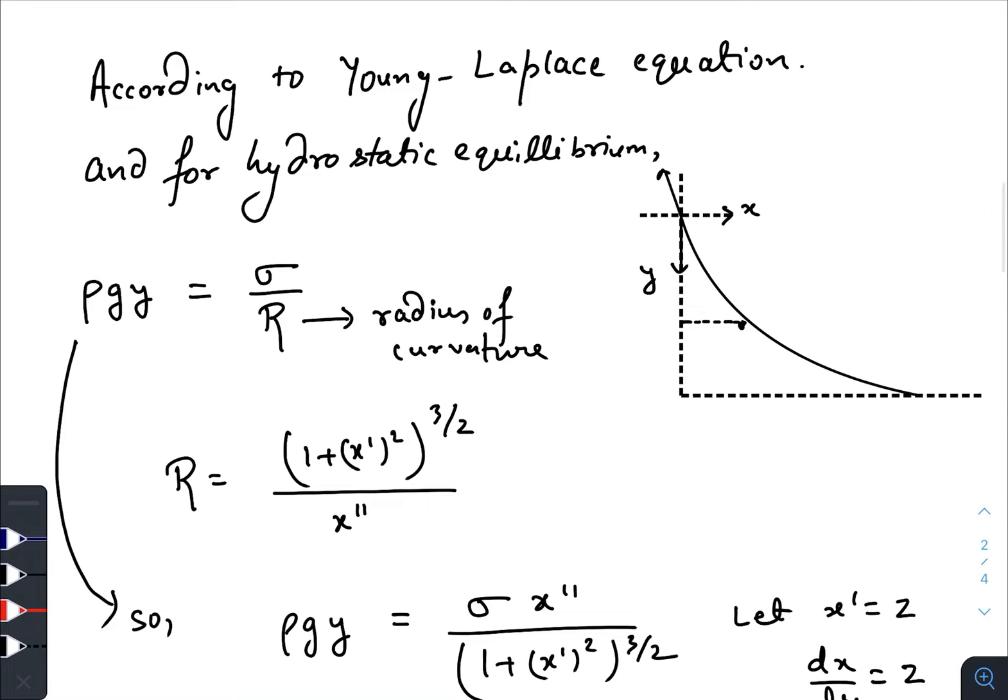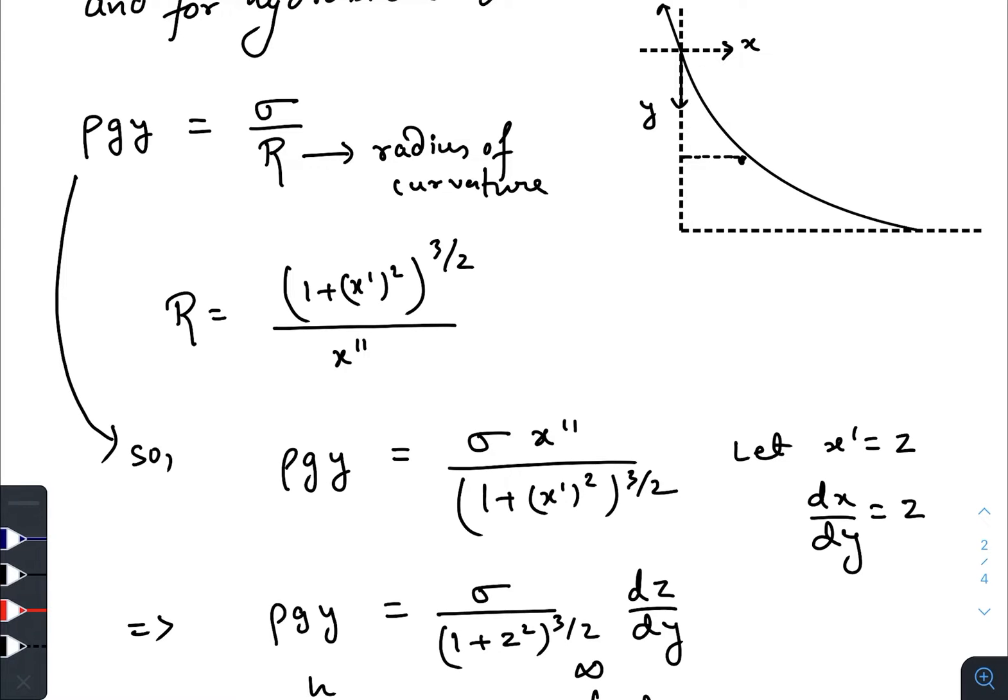So, according to Young's Laplace equation for hydrostatic equilibrium, the pressure at this point, that is the liquid pressure at this point, would be balanced by the excess pressure created on this curved surface. So at a depth of y, the pressure due to liquid would be rho g y, and the excess pressure according to Young's Laplace equation would be surface tension divided by the radius of curvature. So if I draw a circle here, the radius of curvature would be capital R. So as I have said earlier that x is the dependent variable, so the formula for radius of curvature would be 1 plus x prime whole square whole to the power 3 by 2 divided by x double prime. Generally you would have seen that the formula looks something like this, but as I have chosen the coordinate system in such a way that x becomes the dependent variable, that is why the formula has been modified to this one.